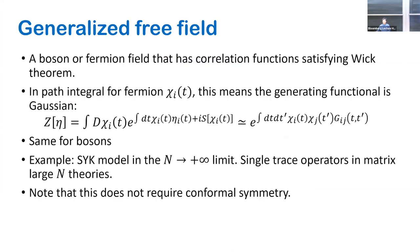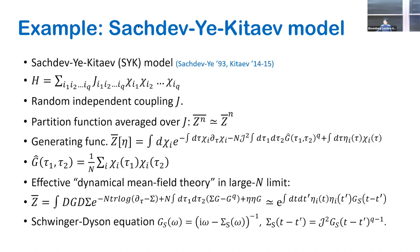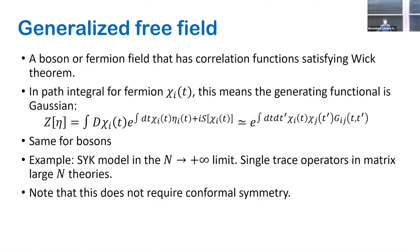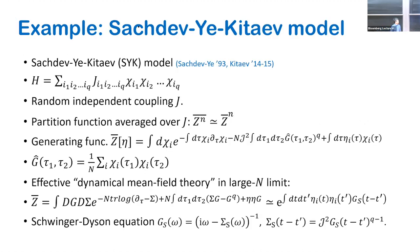By generalized free field I mean fields whose correlation functions satisfy Wick's theorem. More formally, if I introduce a source term coupled to the field and integrate out the chi action, I get a generating function that's Gaussian, and the non-Gaussian terms are subleading. Whenever I have that, the chi correlation functions will satisfy Wick's theorem, so all higher-point functions are determined by the two-point function. This doesn't mean chi is free — for example the SYK model is an interacting system that still satisfies this.